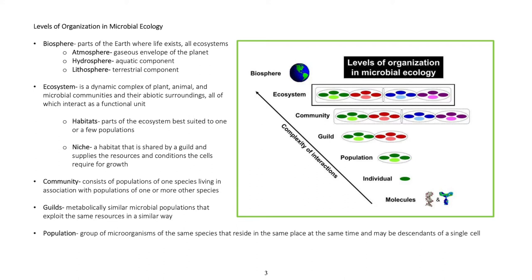Ecosystem is a dynamic complex of plant, animal, and microbial communities, and their abiotic surroundings, all of which interact as a functional unit.